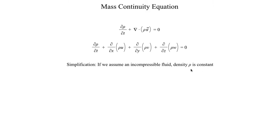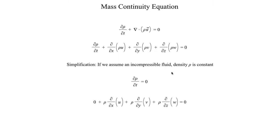First, if density is constant, it doesn't depend on any variable, which means the derivative of density with respect to time is equal to zero — so we can completely forget about that term. And if density is constant, we can pull it out of the derivative operator, giving us rho times du/dx plus rho times dv/dy plus rho times dw/dz. Dividing through by density, we get the incompressible form of the mass continuity equation, as opposed to the fully compressible form at the top.